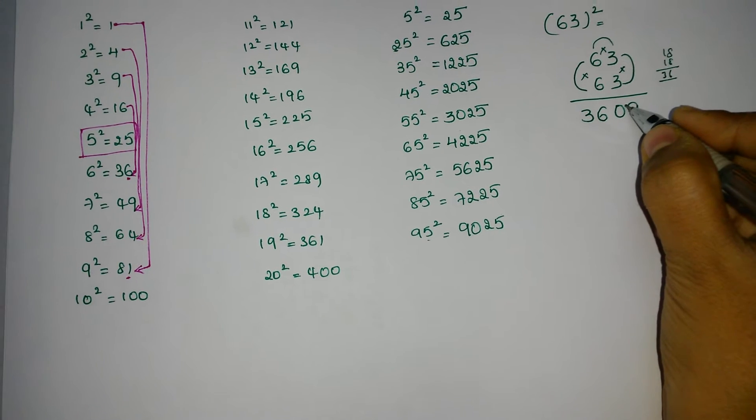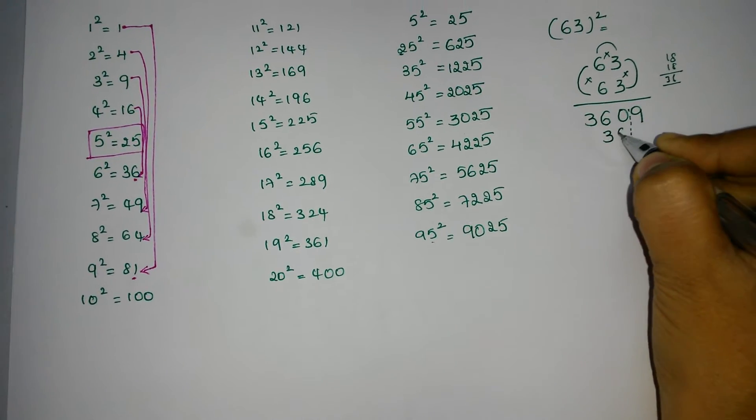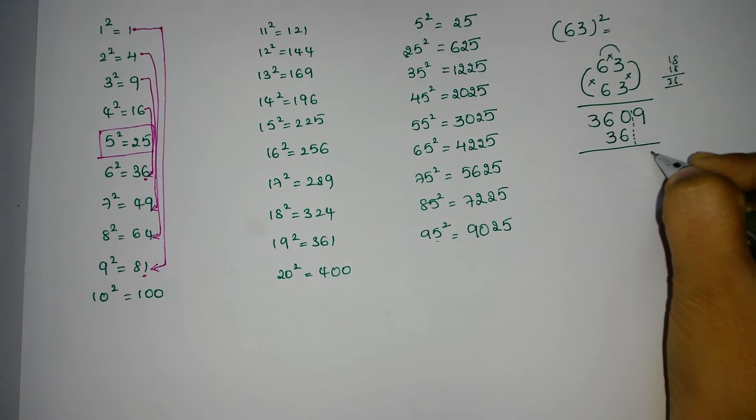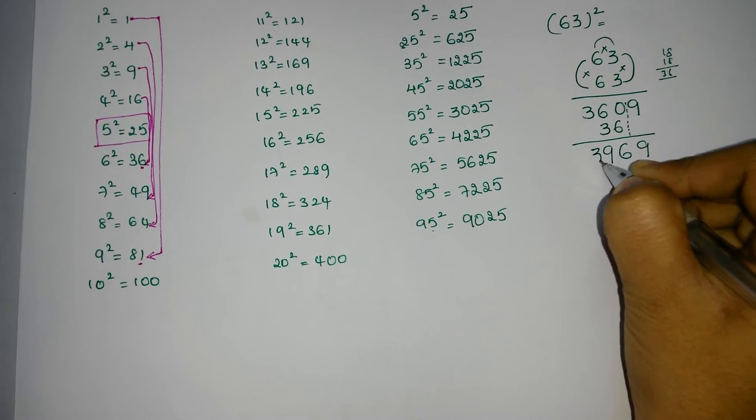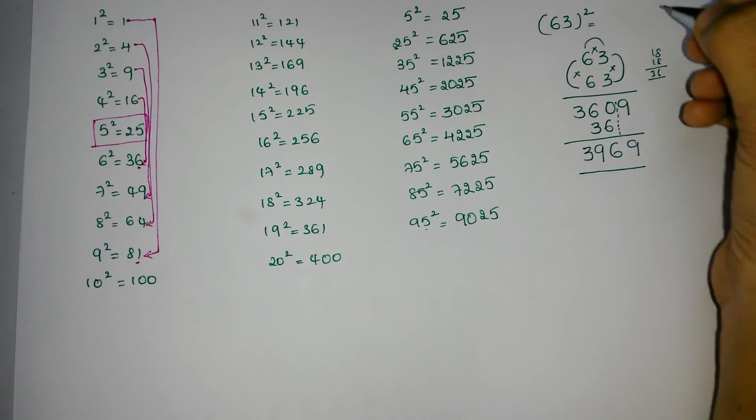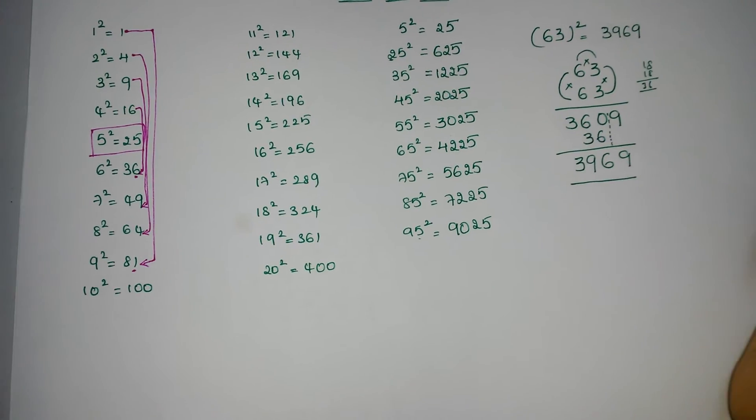So leaving one digit right from here, 36, that means 9, 6, 9, 3. This will be the answer of 63 square. 3969 is the answer.